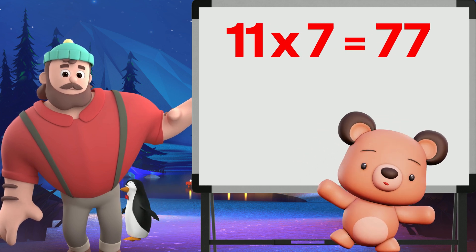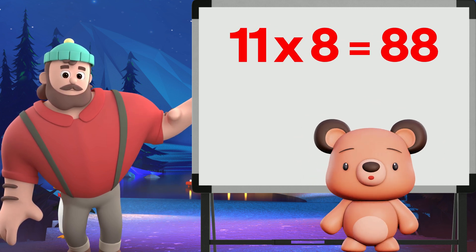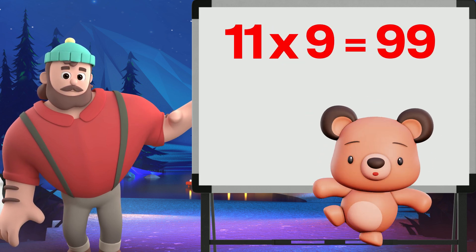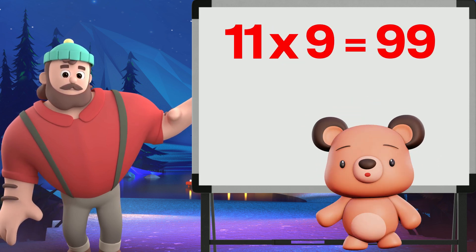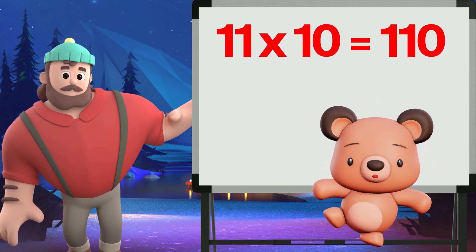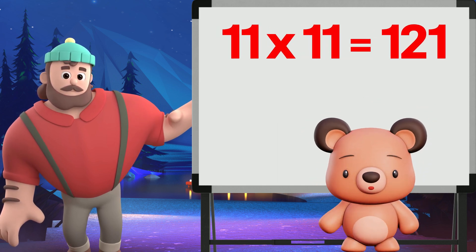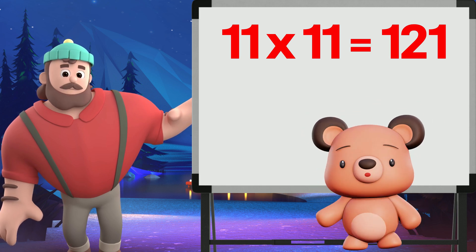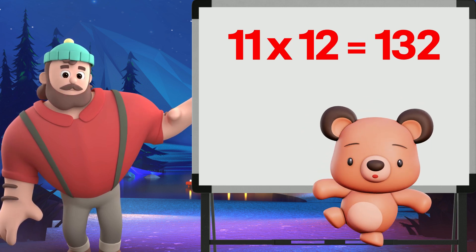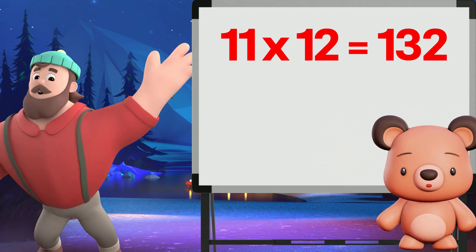Eleven times seven is seventy-seven. Eleven times eight is eighty-eight. Eleven times nine is ninety-nine. Eleven times ten is one hundred ten. Eleven times eleven is one hundred twenty-one. Eleven times twelve is one hundred thirty-two.